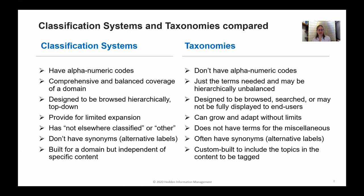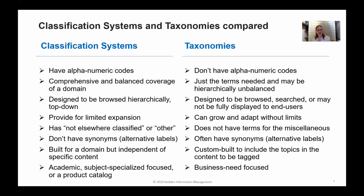Classification systems are built for a subject domain, or even all of knowledge if for a library, but they are somewhat independent of specific content — they can be used for any books. Whereas taxonomies tend to be custom-built for a specific set of content and specific users, to include the topics and content to be tagged. A final observation: classifications are often academic or have a subject-specialized focus. An exception would be a product catalog classification system, which can be very useful for extensive, detailed, specific products. Taxonomies, in contrast, tend to be more business-need focused.